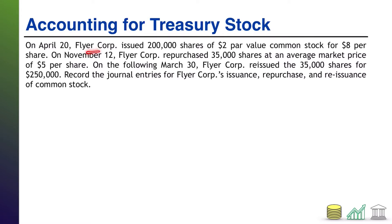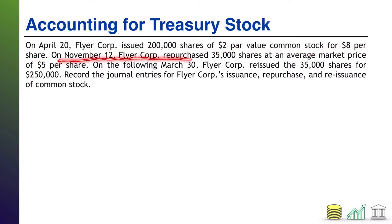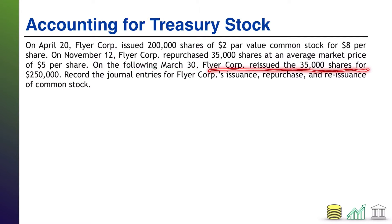On April 20th, Flyer Core issued 200,000 shares of $2 par value common stock for $8 per share. On November 12th, Flyer Core repurchased 35,000 shares at an average market price of $5 per share. And on the following March 30th, Flyer Core reissued the 35,000 shares for $250,000.